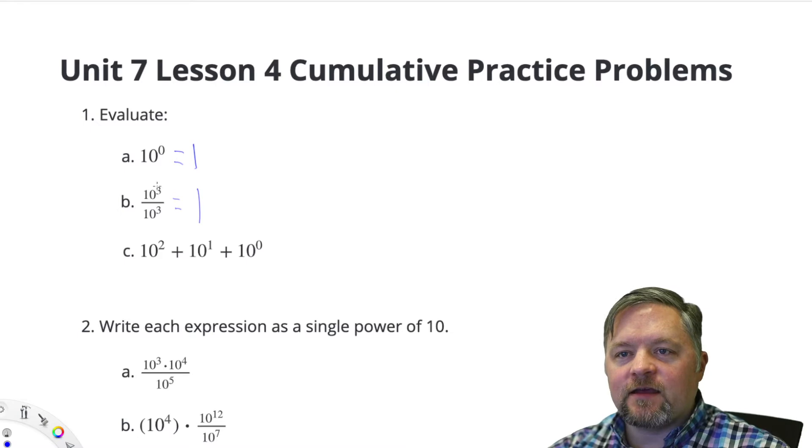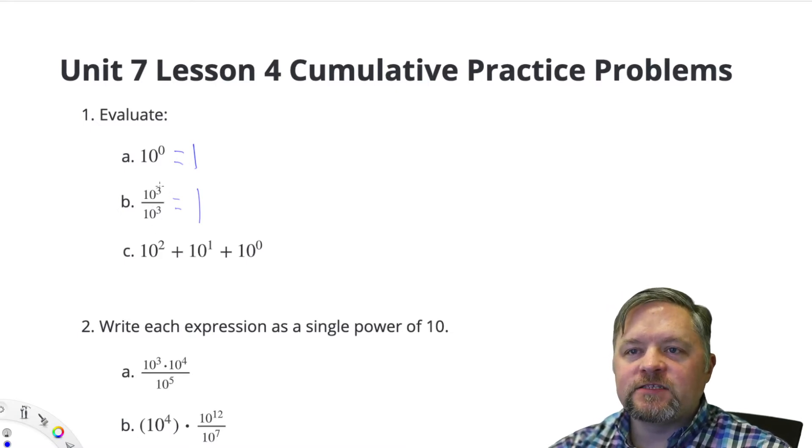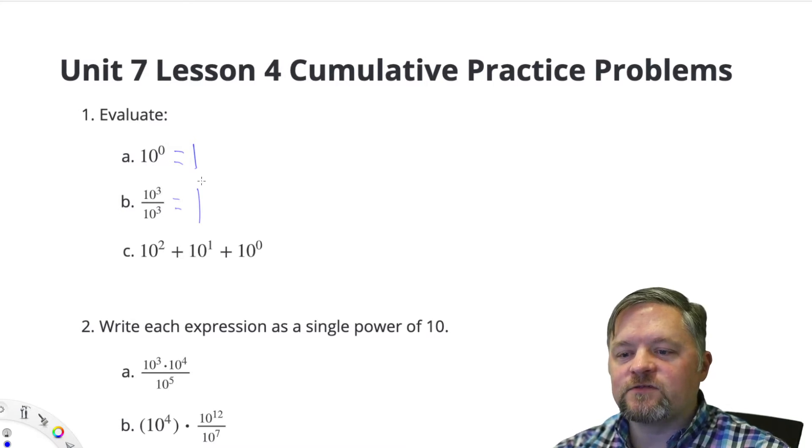This kind of explains this because if we have an exponent divided by an exponent, we subtract them. 10 to the 3 divided by 10 to the 3 means subtract the exponents. 3 subtract 3 is 0. So this is also 10 to the power of 0. Anything divided by itself is 1.